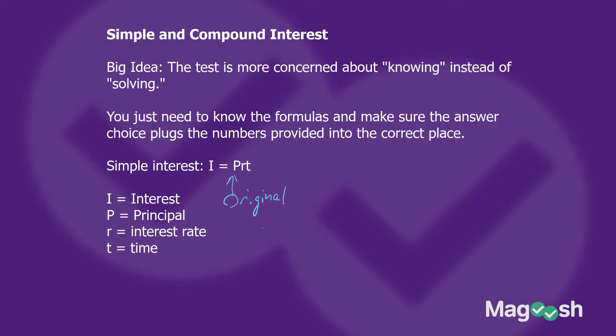Say I gave you $100 and charged you 5% over that. Then we have T, which is the time interval — is it every day, every month, every year? The question will always tell you that, and you just plug T into the equation. So essentially, interest equals the principal times the interest rate times time: I = PRT.